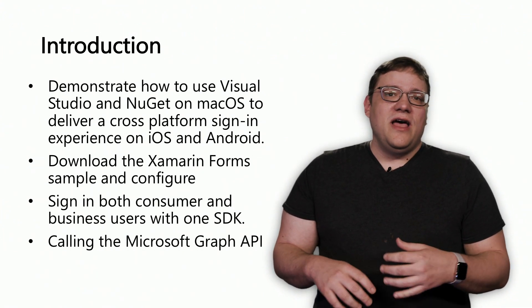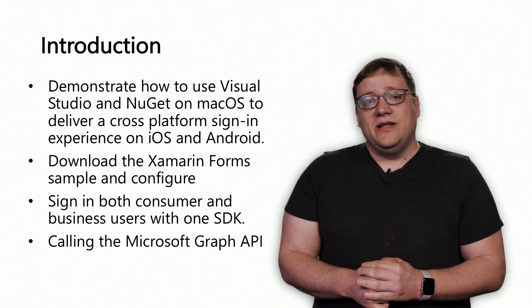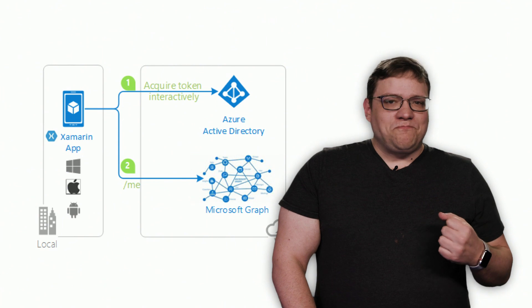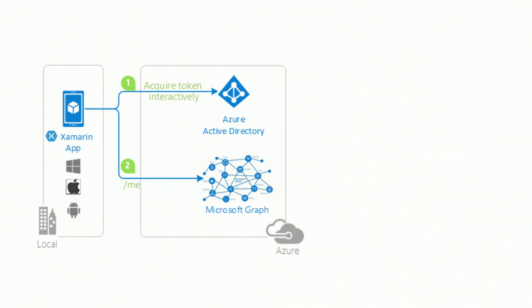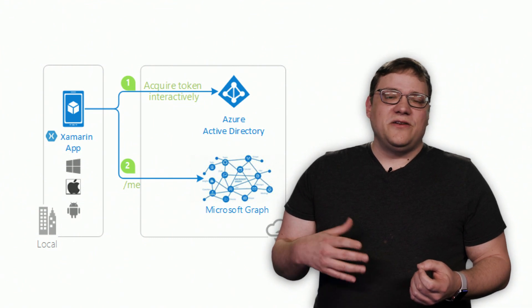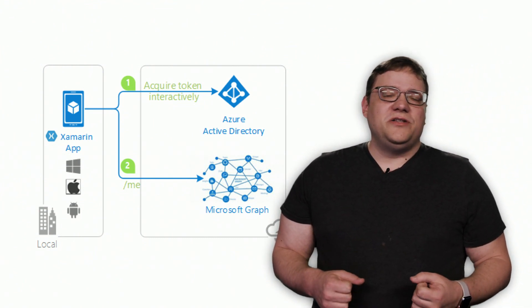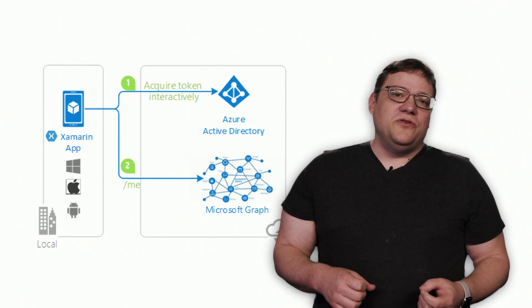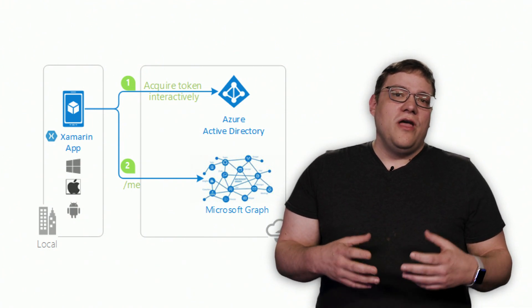That's a neat capability we're introducing with MSAL and our new identity endpoint that a lot of customers have been asking for. As we look at what we're going to be demonstrating, Xamarin can target iOS, Android, and Windows Universal Platform. We'll be calling interactively to get a token from the Microsoft Azure Active Directory endpoint and then using that to call the Graph. We'll be requesting a scope called User.Read, which is the default permission set up when you first create your application, allowing you to access the graph as the signed-in user.